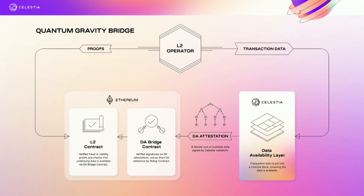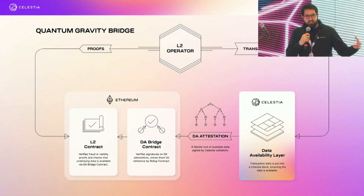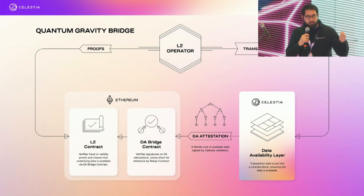The transaction data, which you can see on the right here, gets posted to Celestia, and the Celestia validator set will attest to the availability of this data. If you do not trust the Celestia validator set, anyone can run a node to verify that the data is available, and they can do so without downloading all the data thanks to data availability sampling. These signatures attesting that data has been published to Celestia are then relayed to Ethereum through our Quantum Gravity Bridge contract in the form of a data availability attestation.